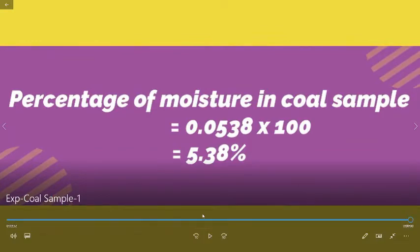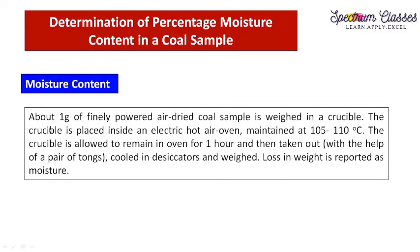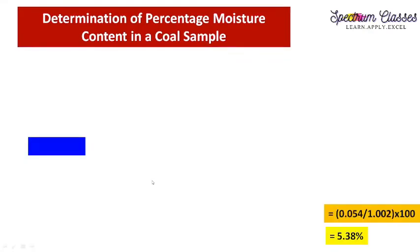This is the percentage of the coal sample. What you have seen is summarized here: about one gram of finely powdered, air-dried coal sample is weighed in a crucible. The crucible is placed inside the hot air oven maintained at 105 to 110 degrees centigrade, allowed to remain for half an hour, then taken out with a pair of tongs, cooled, and placed in the desiccator. The loss in weight is reported as moisture.